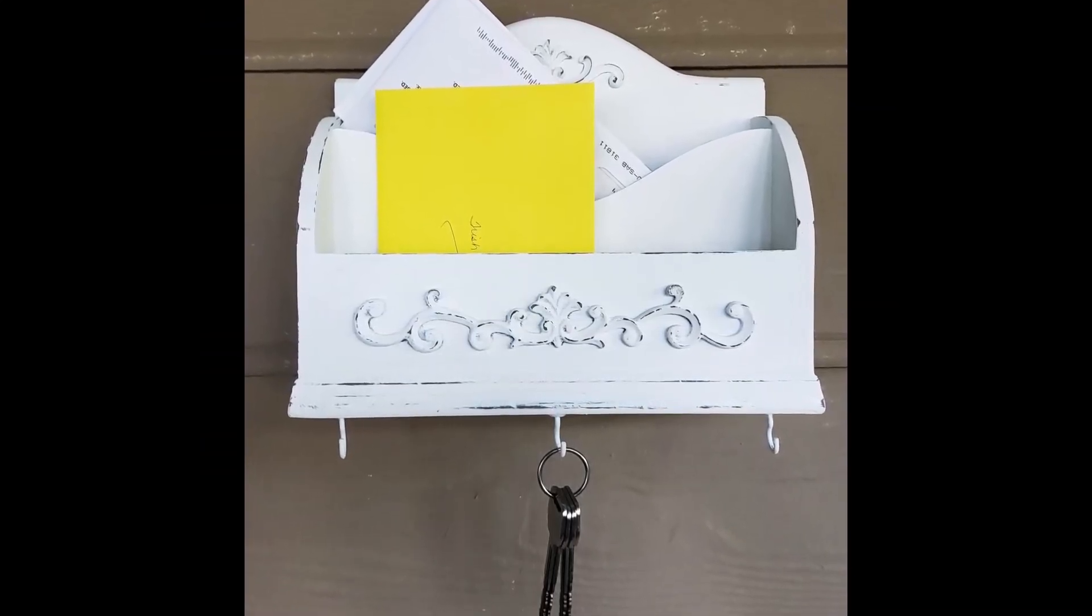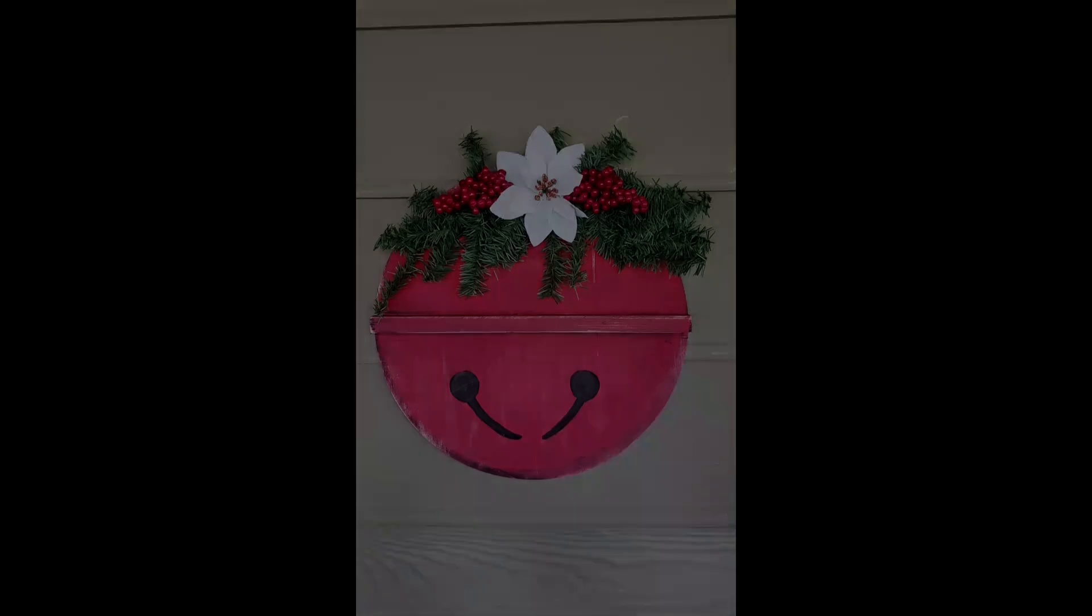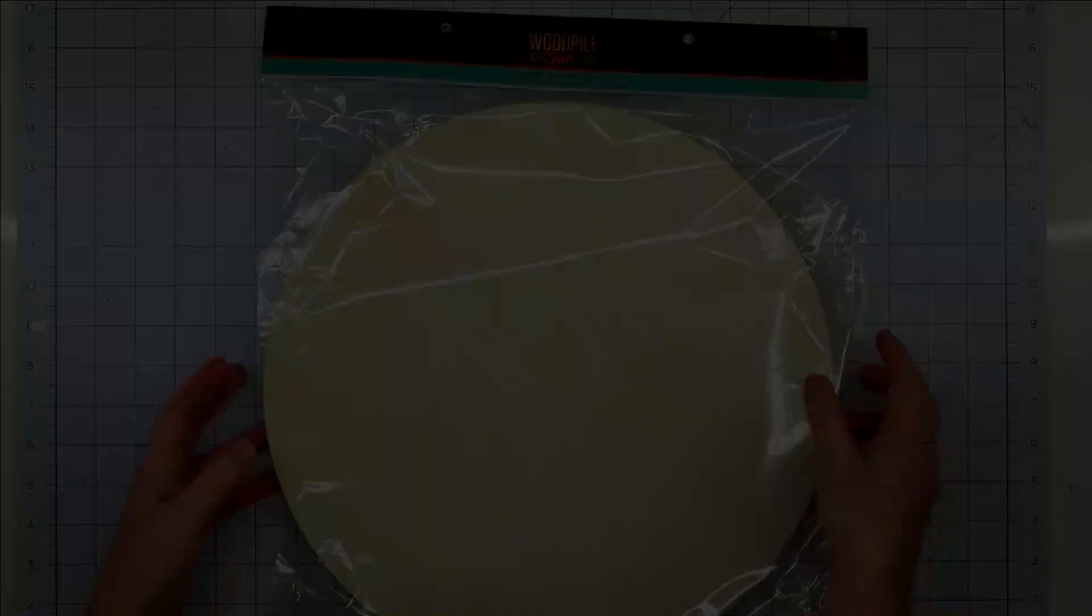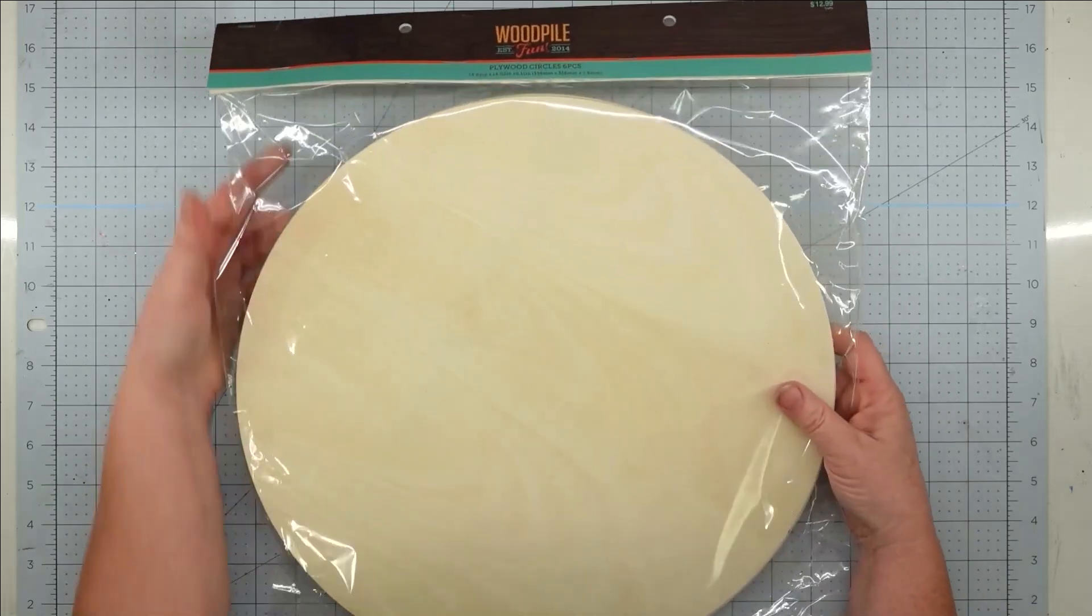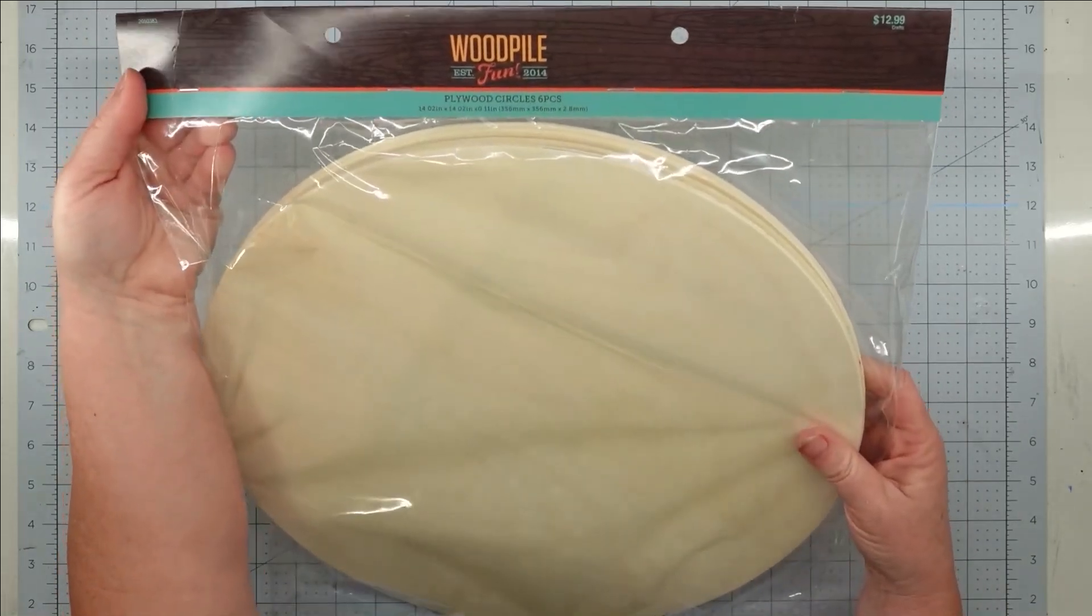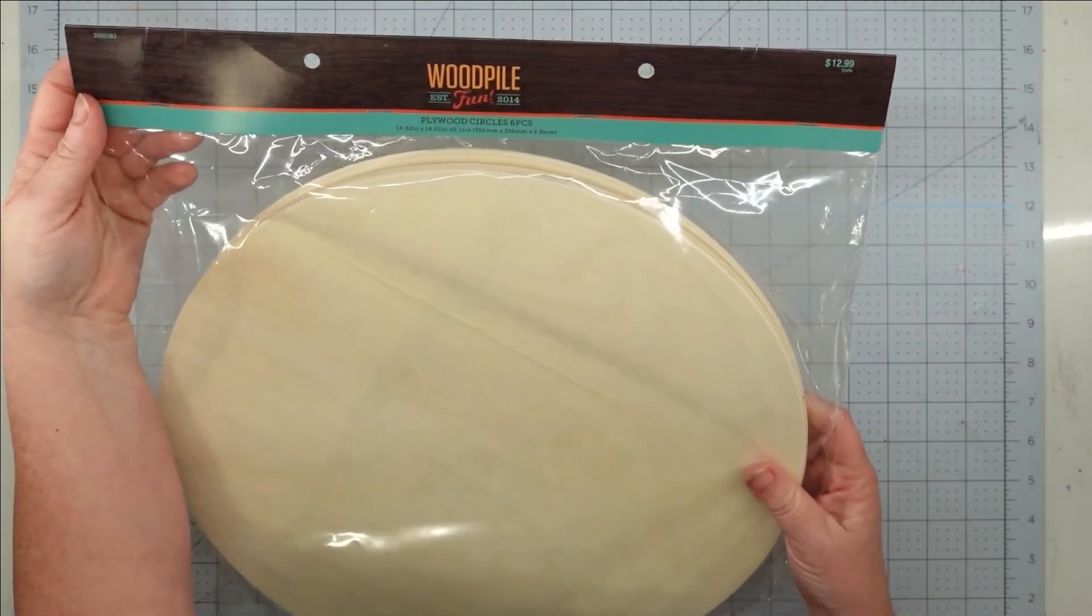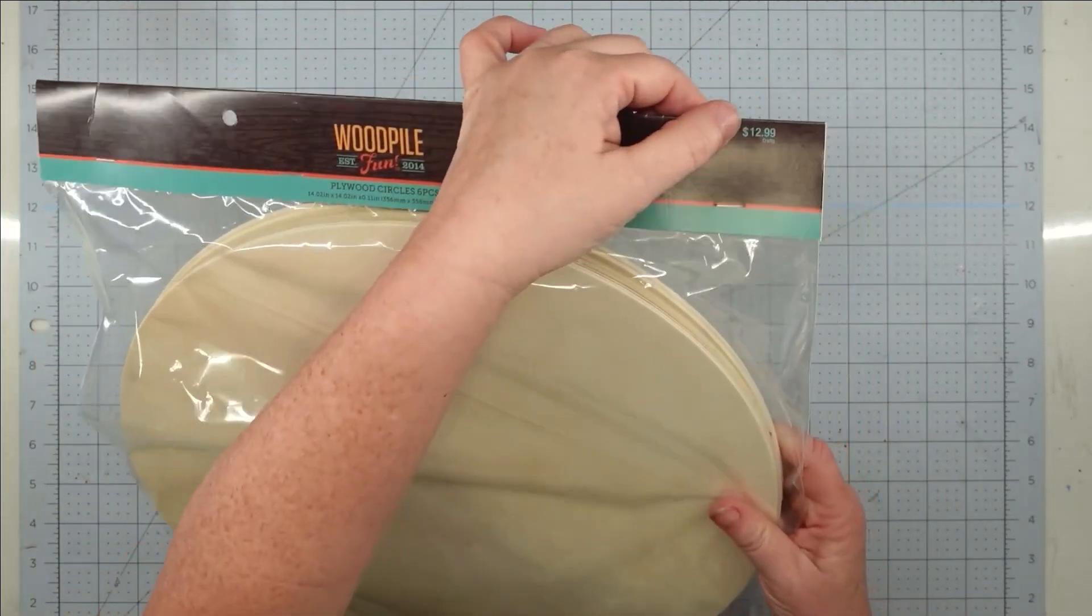Hey y'all, it's Trish. For this project I'm going to use one of these 14 inch plywood rounds that I got from Hobby Lobby. They come six in a pack and they're $12.99, but every other week they have them on sale for 40% off.